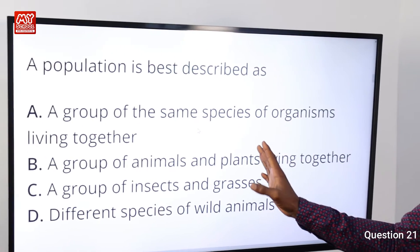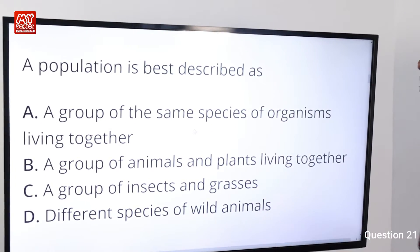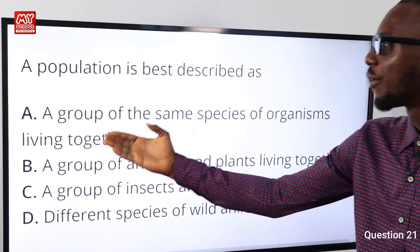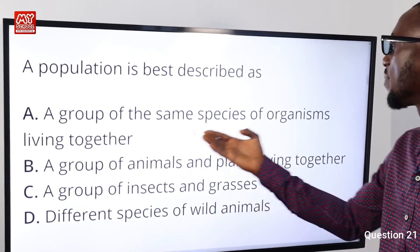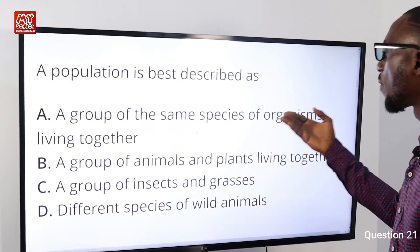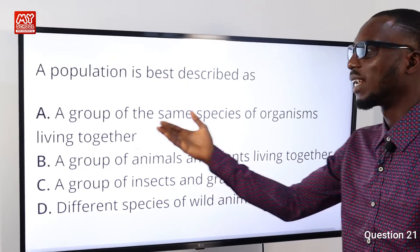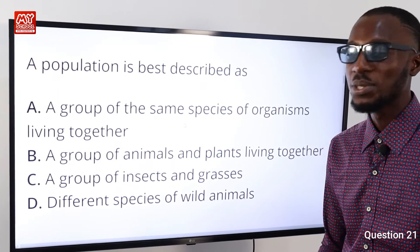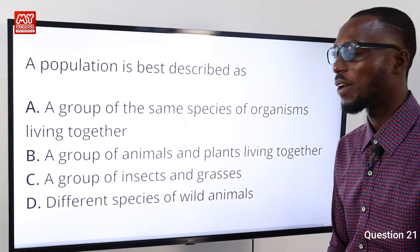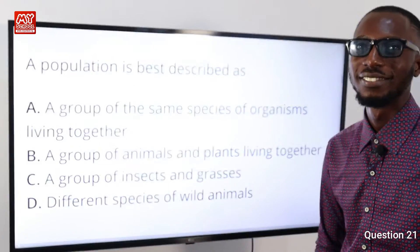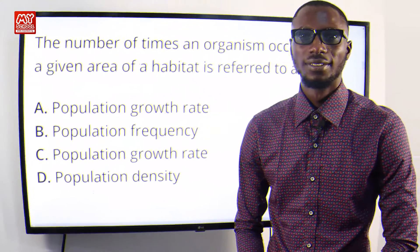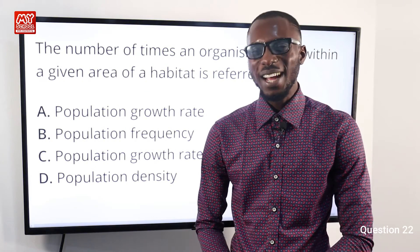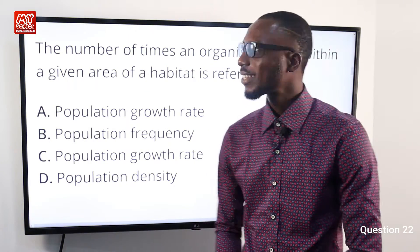Question 21: A population is best described as a group of the same species of organisms living together. That makes option A very correct.